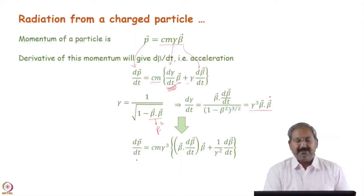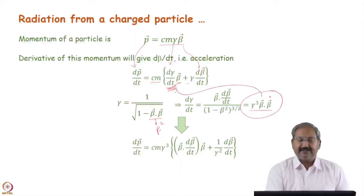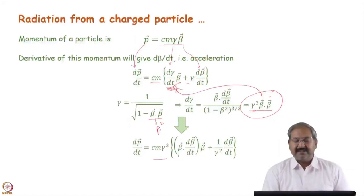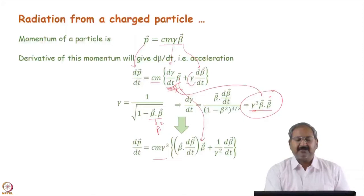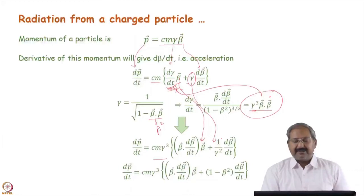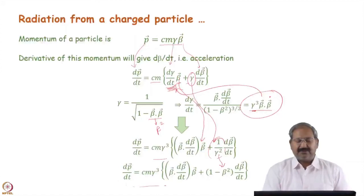We can now write dp/dt. Using this relation, dp/dt = c·m·gamma^3 multiplied by a bracket containing beta·dot·(d_beta/dt)·beta plus (1/gamma^2)·(d_beta/dt). We can also convert 1/gamma^2 into (1 - beta^2). This is our complete formulation of dp/dt. You can see that dp/dt again depends on the dot product of velocity and acceleration — the direction matters.